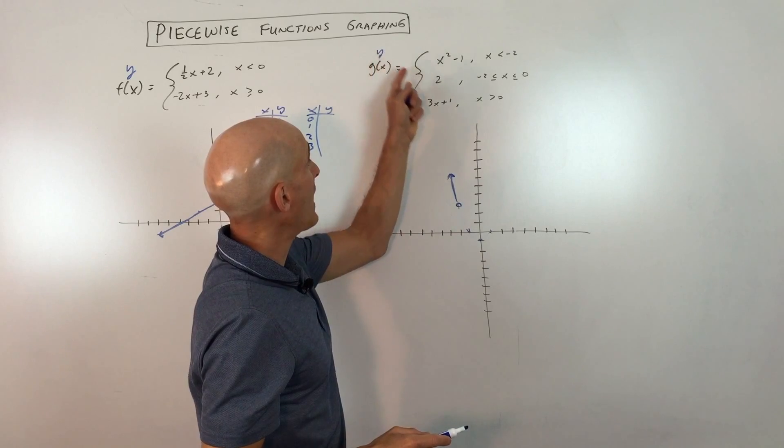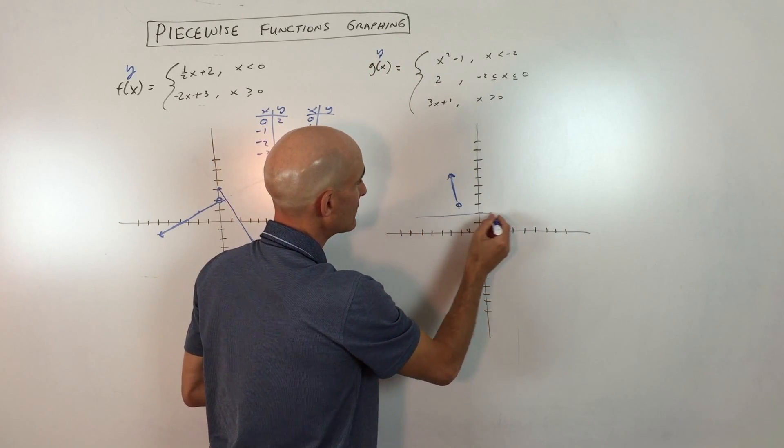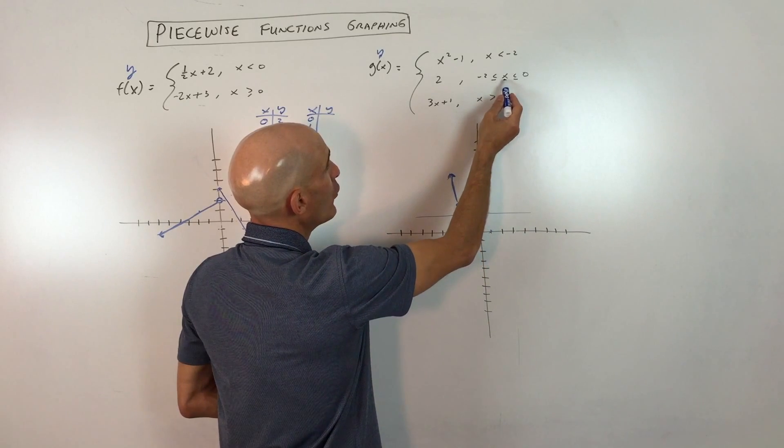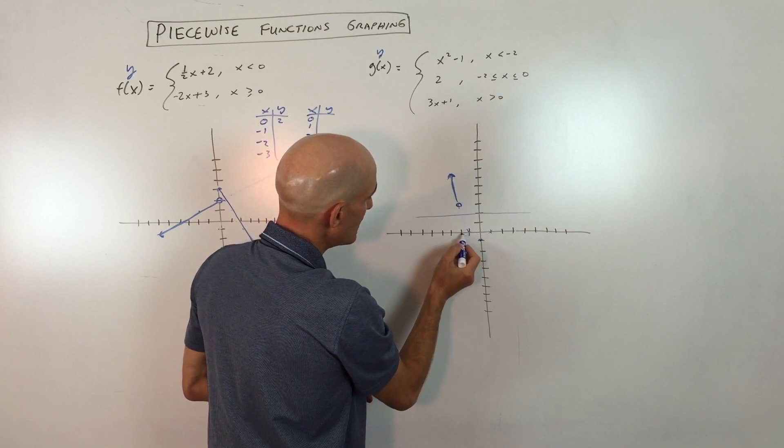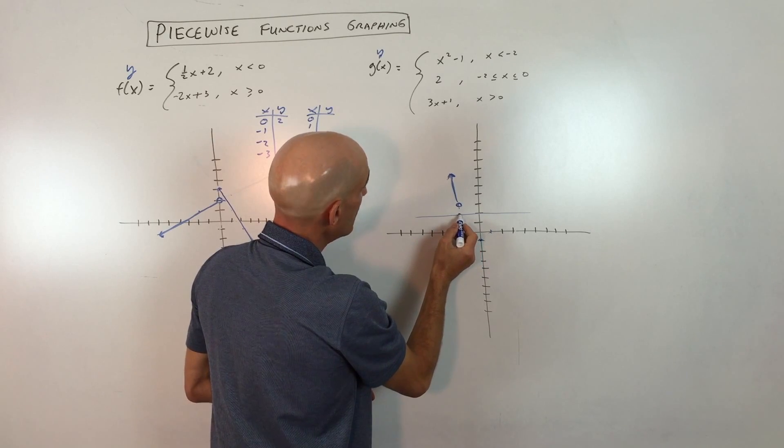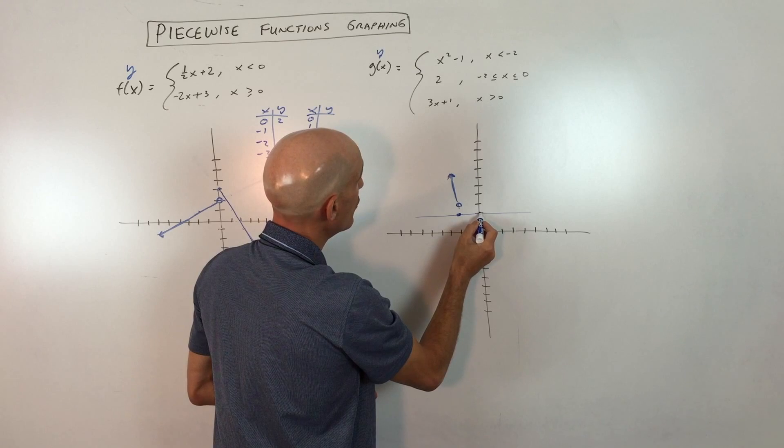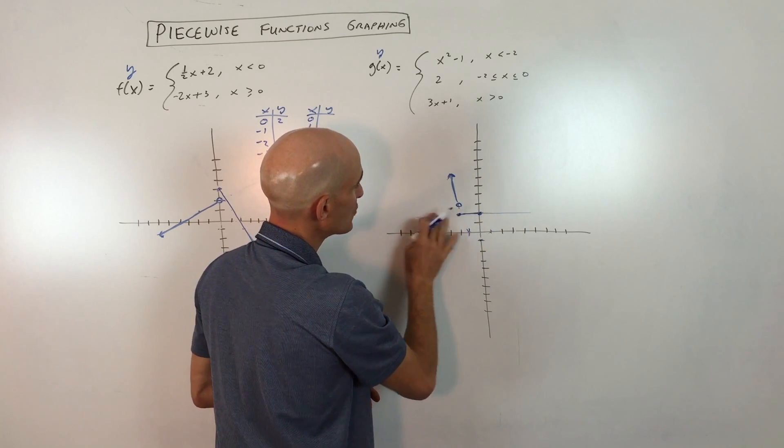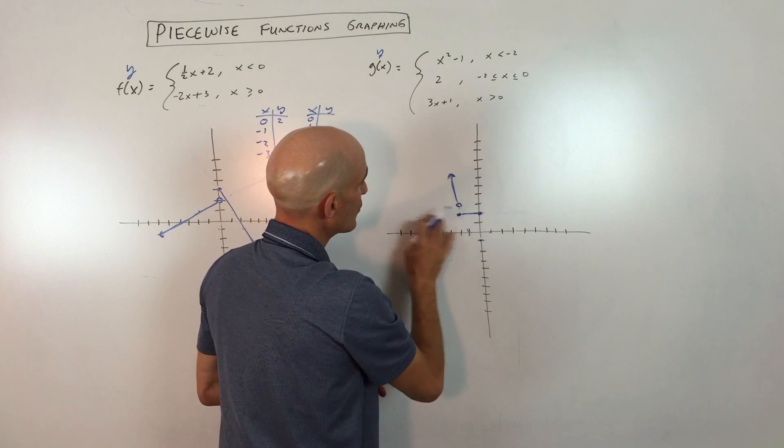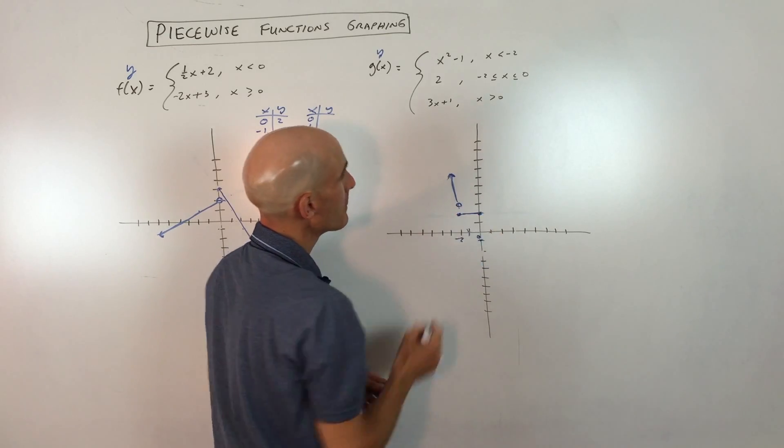Then the second one says y equals 2. Now we know the line y equals 2 is a horizontal line like this, but only when x is in between negative 2 and 0. So here's negative 2 right here, negative 2. And it's equal to, so that means it includes that point up to 0 and it equals 0. So it includes that point. So it's just going to be that piece right there. The rest of this we're going to erase. We don't need it. We're just in between x is negative 2 and x is 0 right in here.